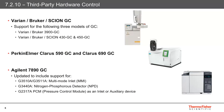Concluding the improvements for third-party GC control, there's an updated driver for the Agilent 7890. This includes support for the 3510A and the 3511A multimode inlet, the G3440A nitrogen phosphorus detector, and the pressure control module, the G2317A. This will expand on the instrument's capabilities for sample analysis.